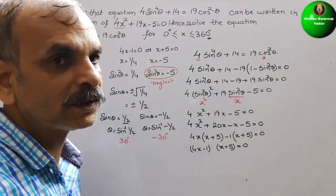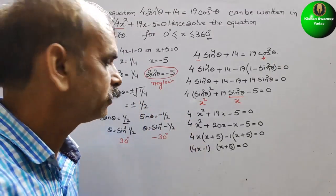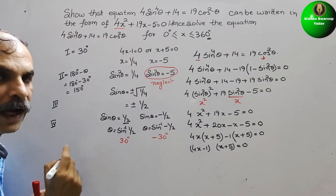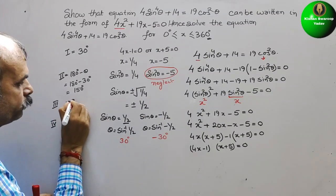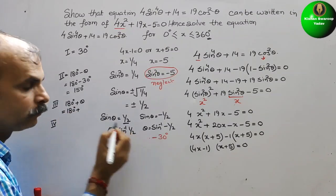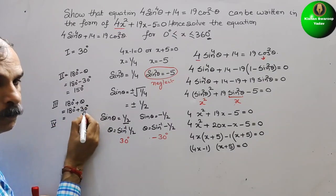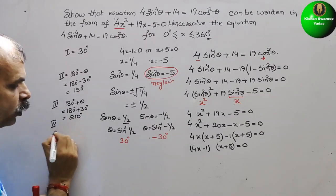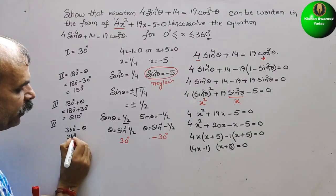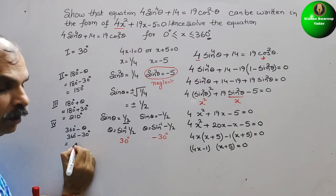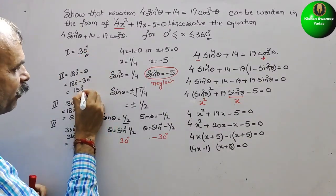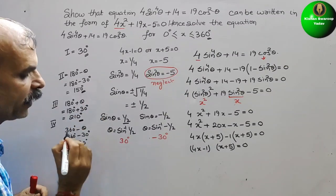For sinθ = −1/2: sin is negative in the third and fourth quadrants. In the third quadrant: 180° + 30° = 210°. In the fourth quadrant: 360° − 30° = 330°. So here you will get four solutions: 30°, 150°, 210°, and 330°.